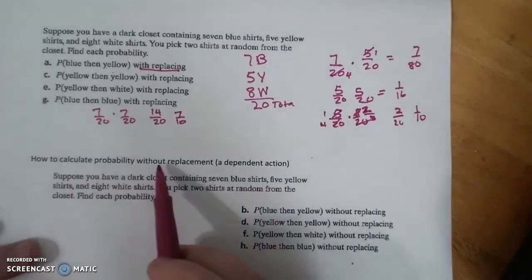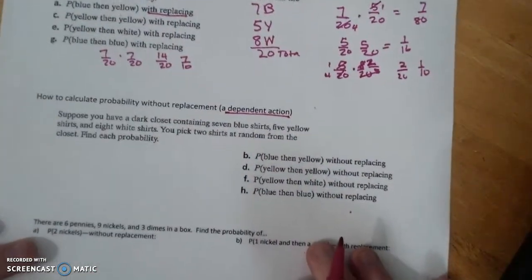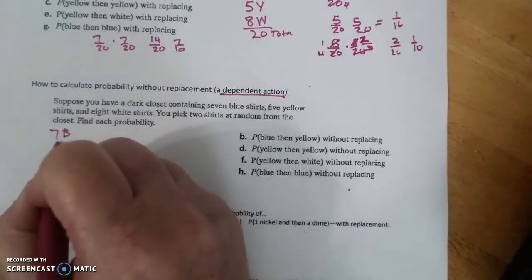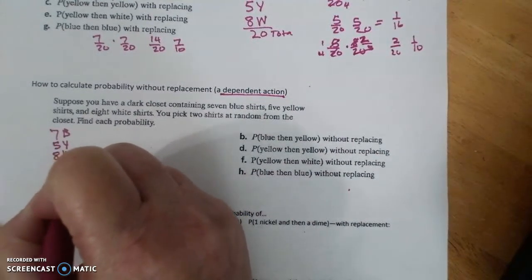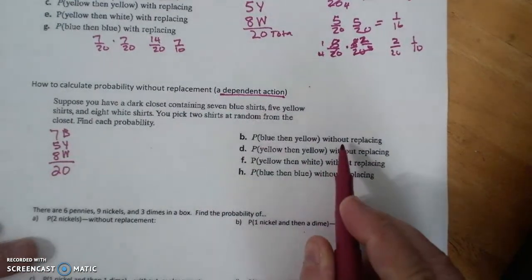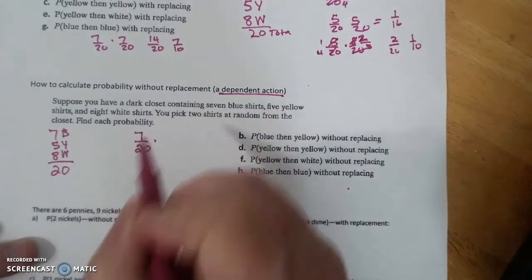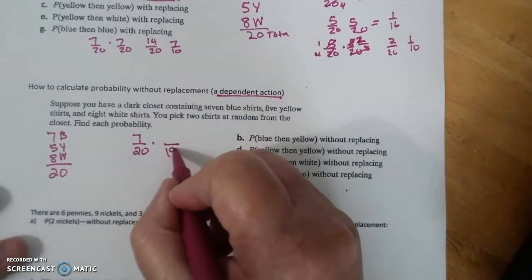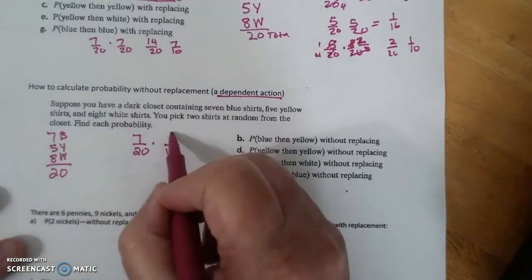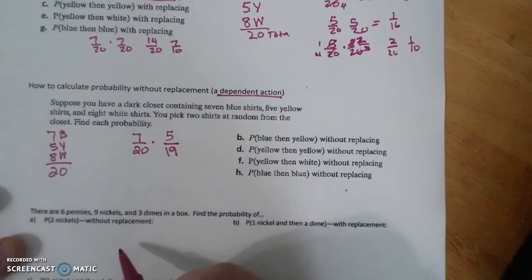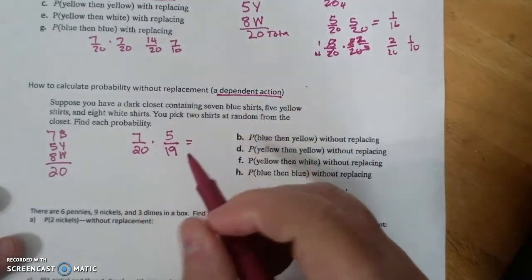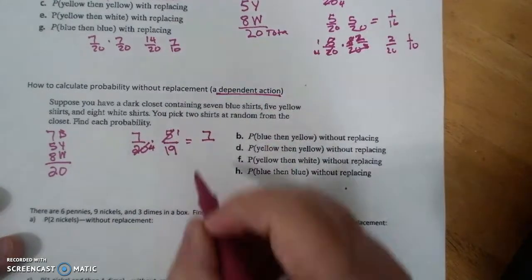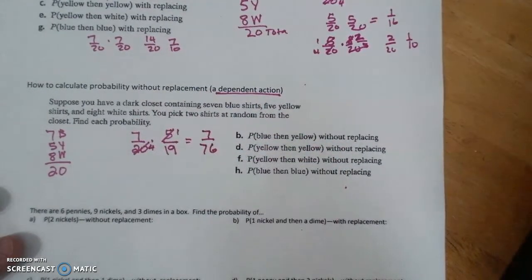How to calculate probability without replacement, which is a dependent action. We are going to have the same dark closet and the same amount. So we still have 7 blue, 5 yellow, 8 white for a total of 20. And this is without replacement. So blue is 7 out of 20. Now if you drew it out, you're taking that shirt out of the closet, so I only now have 19 shirts left, and 5 of them are yellow. And that gets into some other math because we're simplifying. 1 and 4. That's 7 over 76.